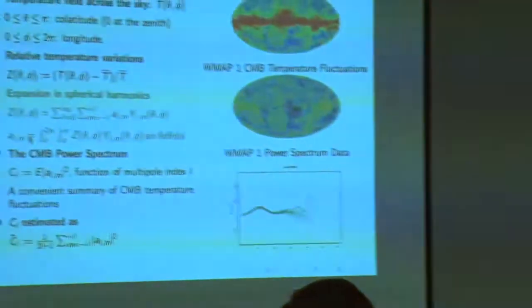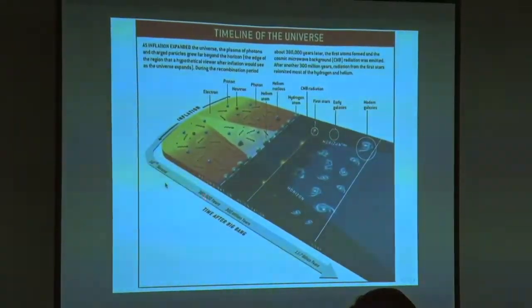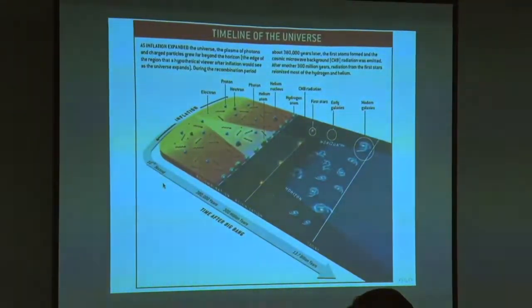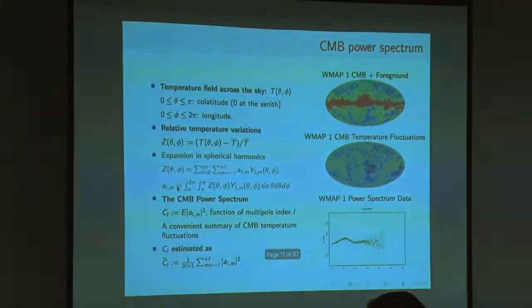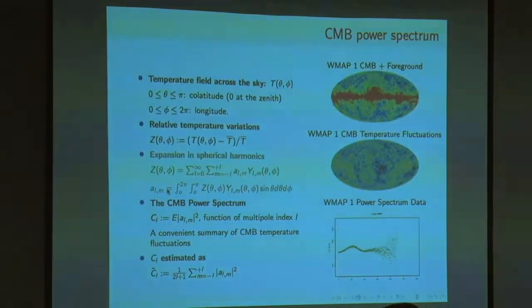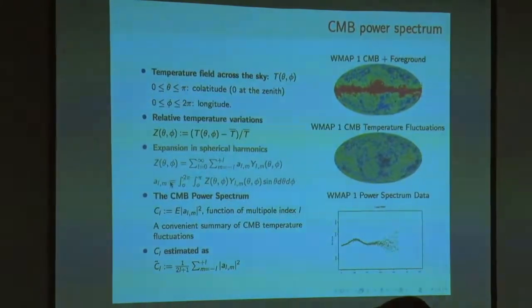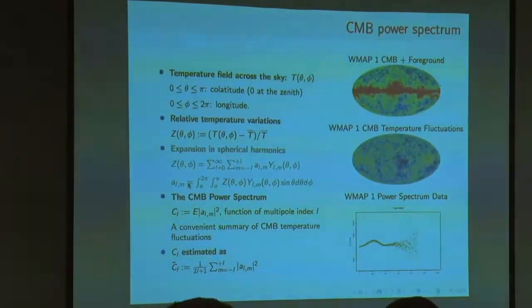It is the fluctuations in temperature which contain information. 380,000 years after the Big Bang is as close as we can get to the Big Bang. These fluctuations contain information about the early state of the universe where the photon-mass, light and mass interaction stopped.